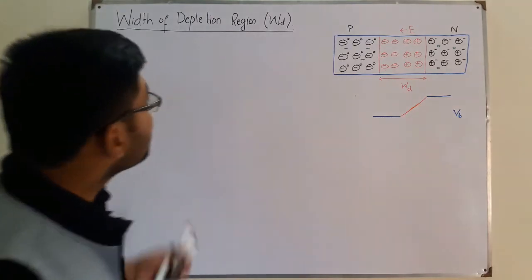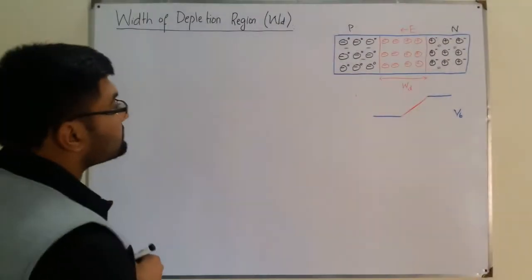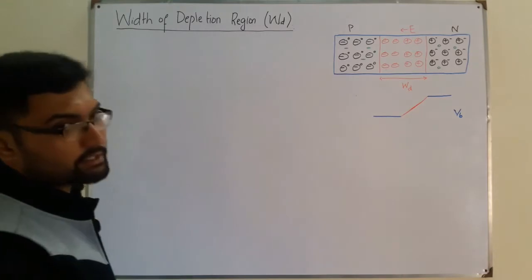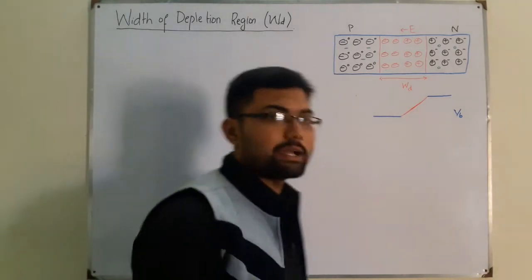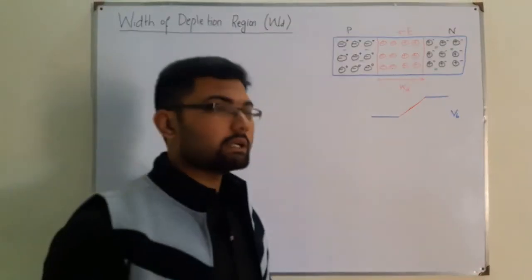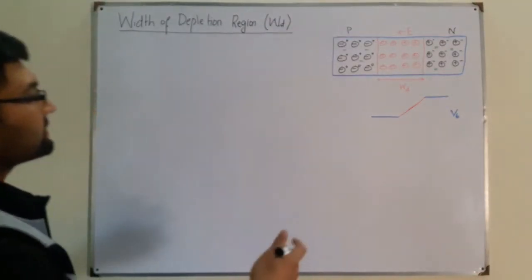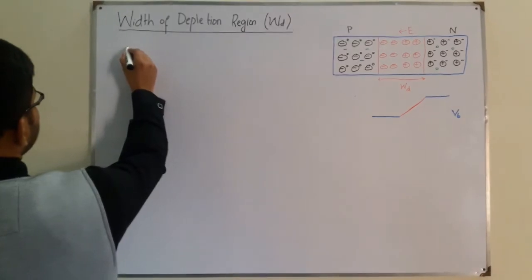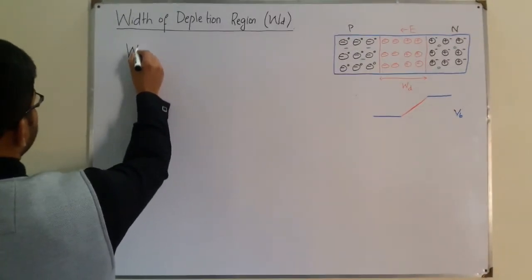Today we see the width of depletion region. The derivation is not important. The book has no interest in the derivation, but I found it somewhere, so I thought to share it with you.